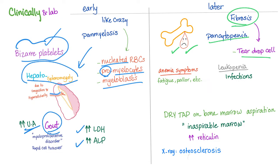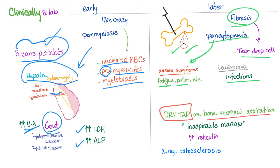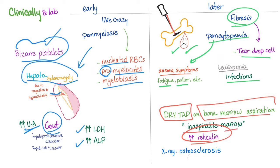If you have pancytopenia, you will have anemia with fatigue and pallor. If you have leukopenia, you will have infections. You can have a dry tap on bone marrow aspiration — the doctor inserts the needle but draws nothing, no tissue sample — because the bone marrow is fibrosed with increased reticulin. We call this an inaspirable marrow. On X-ray, you can find osteosclerosis because the bone marrow is gone.